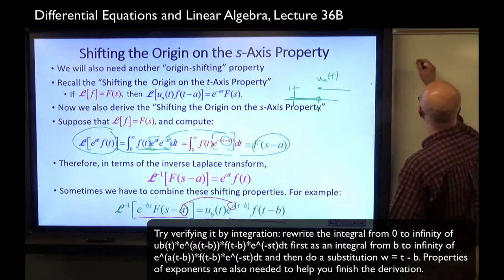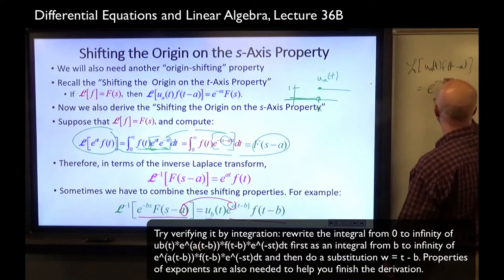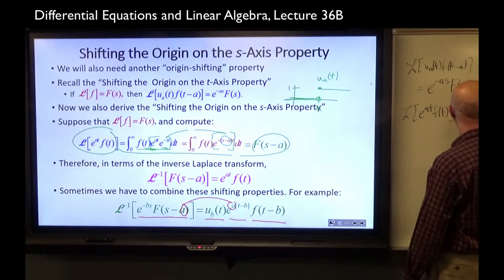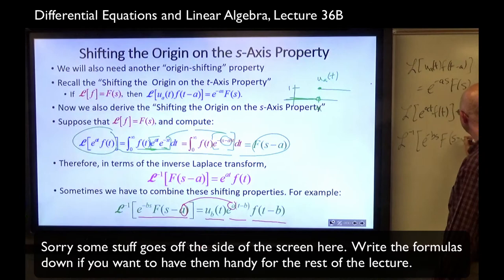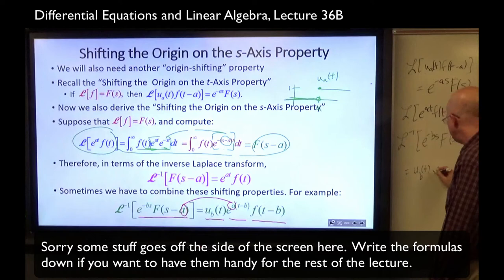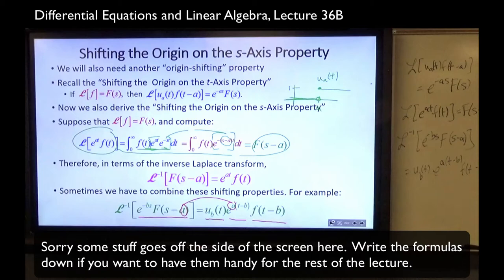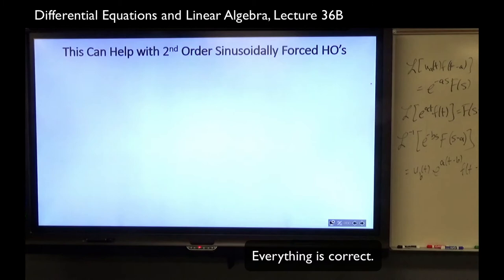I want to write these properties on the board for reference. Property one: L{u_a(t)·f(t−a)} = e^{−as}·F(s). Property two: L{e^{at}·f(t)} = F(s−a). Finally, the inverse Laplace transform of e^{−bs}·F(s−a) equals u_b(t)·e^{a(t−b)}·f(t−b). This can help with second-order sinusoidally forced harmonic oscillators.